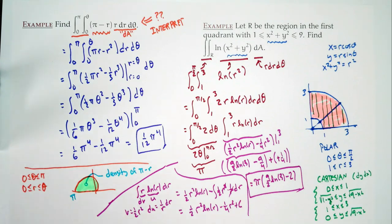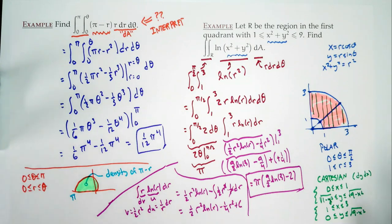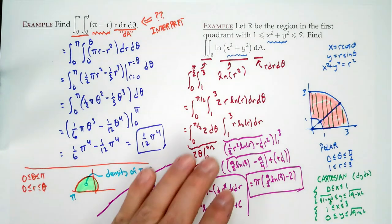That wasn't so bad. Yes, we had to do integration by parts — but could you imagine working with those Cartesian bounds? That would be terrible. Be smart.